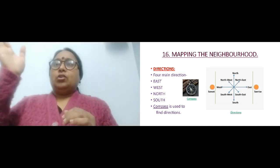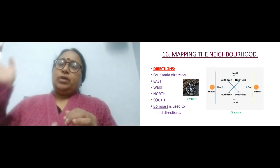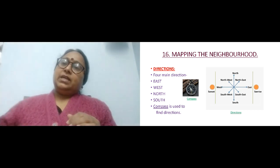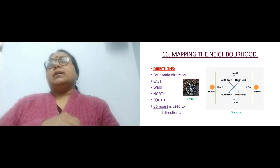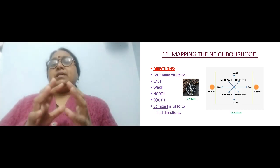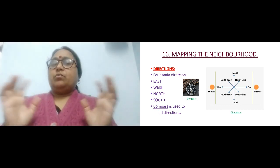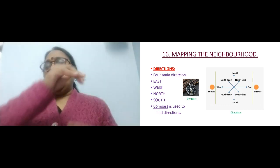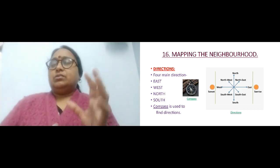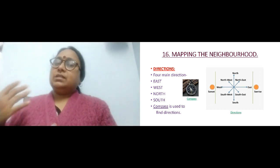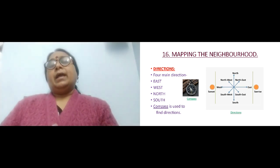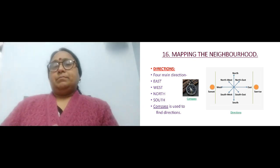In between north and west you have northwest, between north and east you have northeast, between south and east you have southeast, and between south and west you have southwest. So the main directions are north, south, east, and west, and in between you also have northeast, northwest, southeast, and southwest. To find direction you use an instrument called a compass.